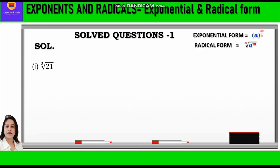Let's start with the solution. First question: cube root of 21. The power of 21 is 1 and the root is 3, so the power becomes the numerator and the root becomes the denominator. We write 21 raised to power 1 by 3. Second question: fifth root of 265. The power is 1 and the root is 5, so we write 265 raised to power 1 upon 5.